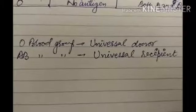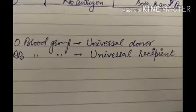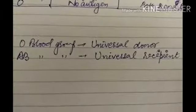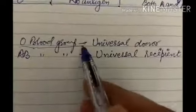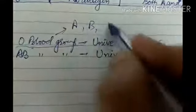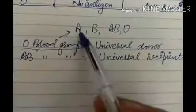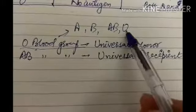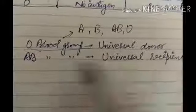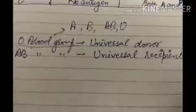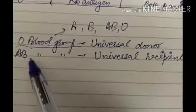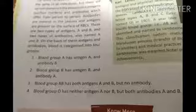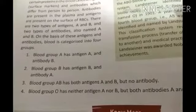The person with blood group O is called the universal donor, meaning they can donate blood to people with blood group A, B, AB, or O. The person with blood group AB is called the universal recipient, meaning they can receive blood from people with blood group A, B, AB, or O. That's all for today — goodbye!